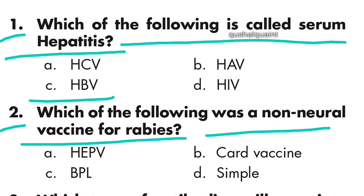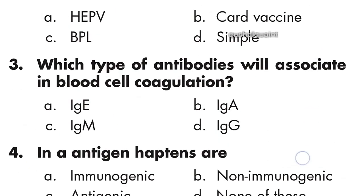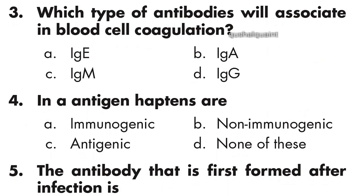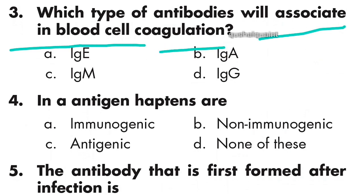Question 2: Which of the following was a non-neural vaccine for rabies? The answer is HDCV. Question 3: Which type of antibodies are associated in blood cell agglutination? The answer is IgM, option C.